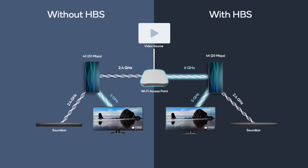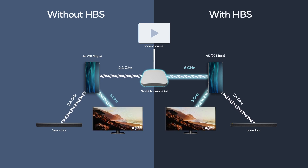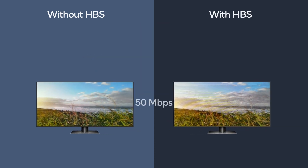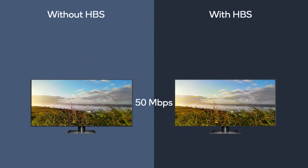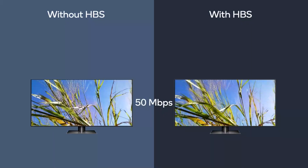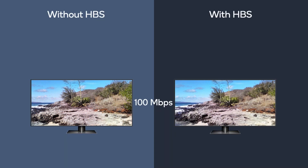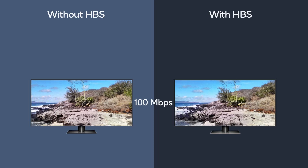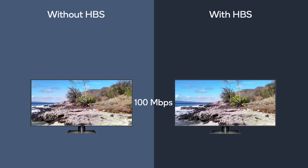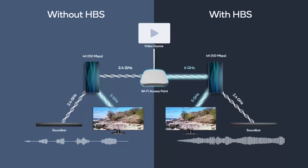The throughput required for a 4K video stream will vary depending on the rate of change of the content and the quality of encoding. There are limited issues when streaming lower throughput content requiring around 20 megabits per second, but as we shift to content that peaks around 50 megabits per second, we see significant stutter and stalls. As quality increases further, throughput averages 100 megabits per second and we see significant stalls in the video.